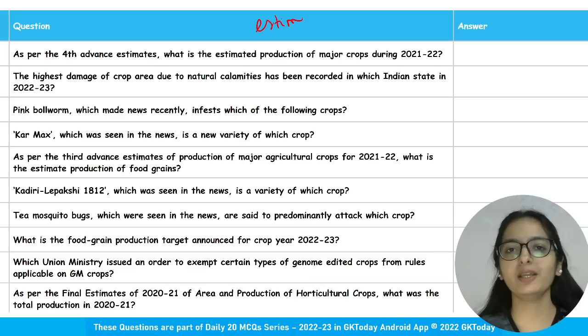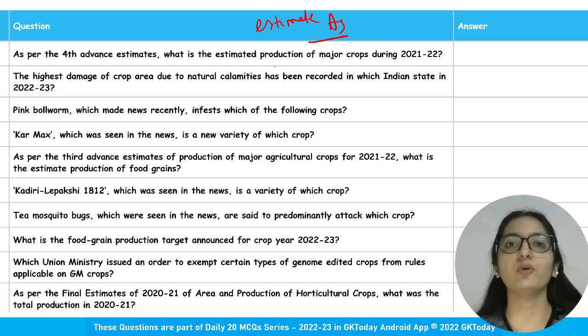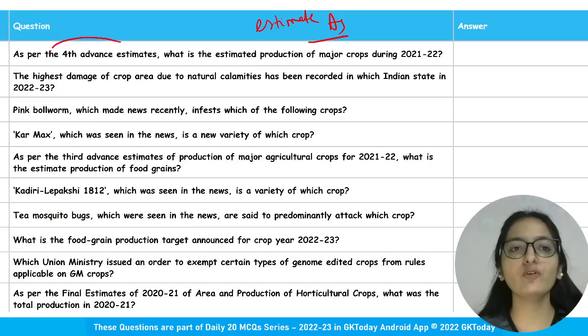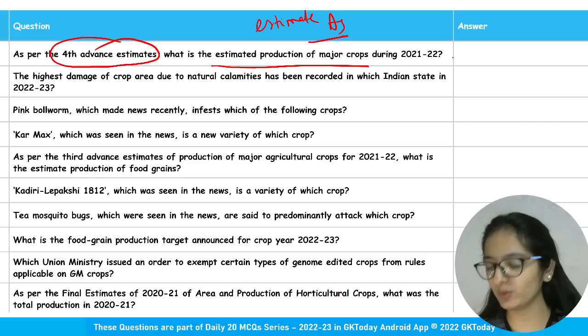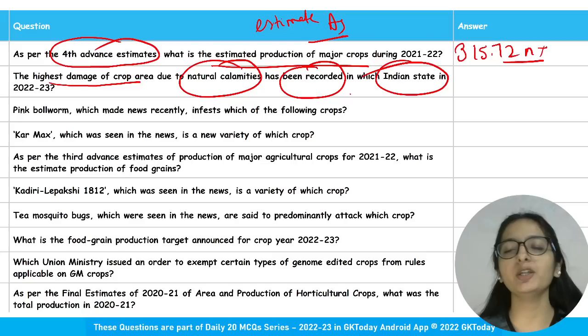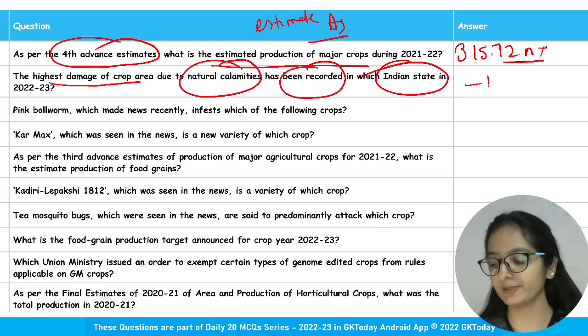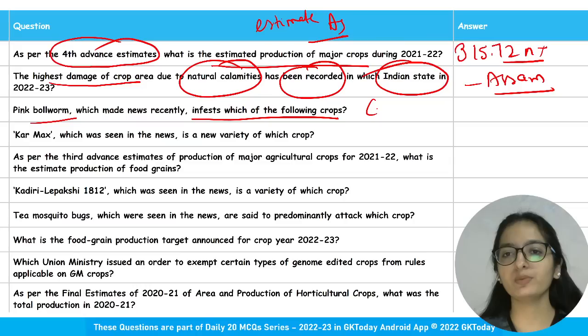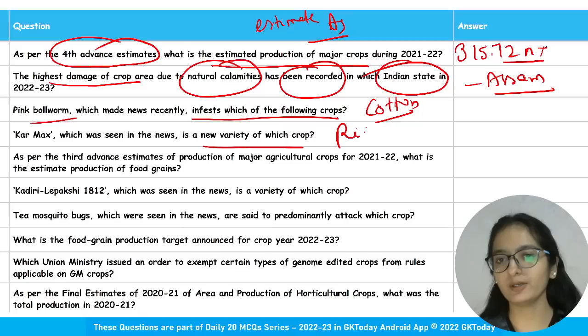Moving to the revision of agriculture estimates — these figures are very important and are directly asked in exams. As per the fourth advanced estimates, the estimated production of major crops during 2021-22 is 315.72 million tons. The highest damage of crop area due to natural calamities in 2022-23 was recorded in Assam. Pink bollworm infests cotton.